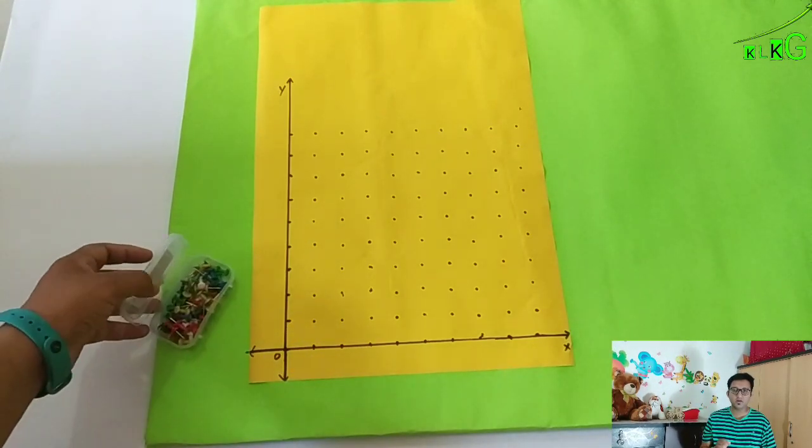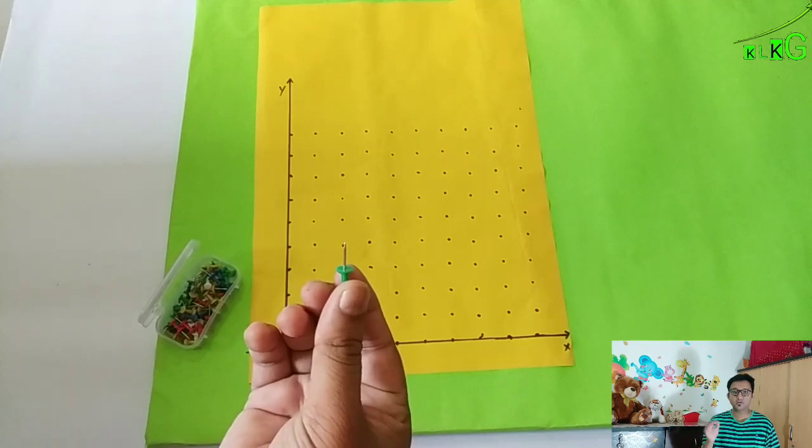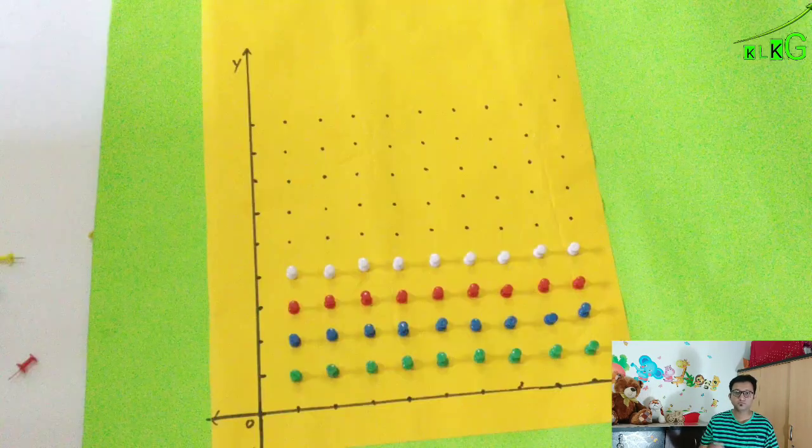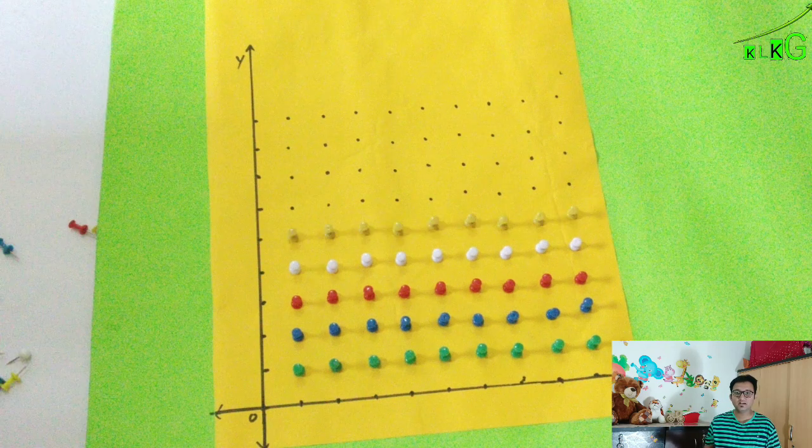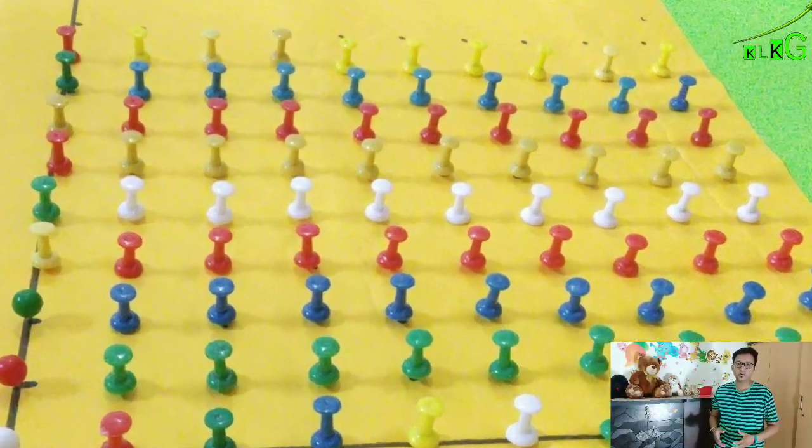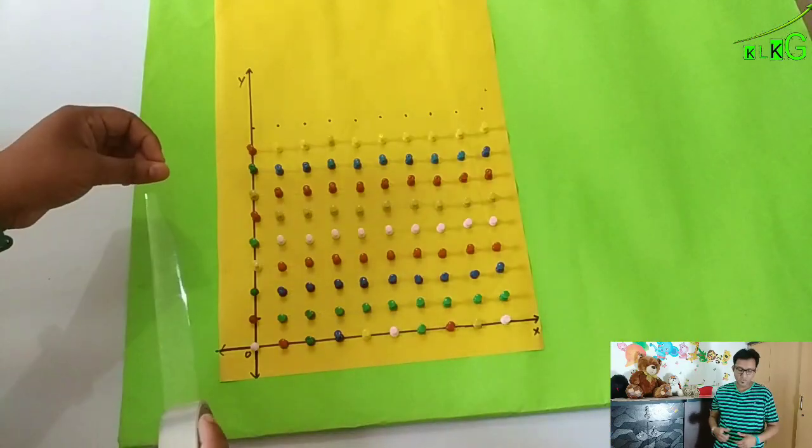And now at every dot I am going to put a thumb pin like this. As the thumb pins are placed, you will get the figure like this. More than half the work is done because the thumb pins have been pasted.